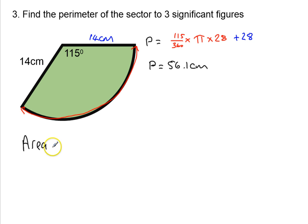Well, I know that the area for a full circle is going to be pi times the radius squared. I'll write that over here. The area of a full circle is going to be pi times the radius squared. And in this case, the radius is 14. So I've got pi times 14 squared.